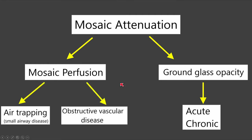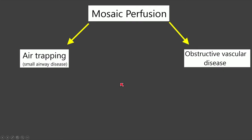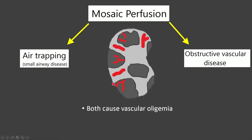Under mosaic perfusion there are two main categories: air trapping, also known as small airways disease, and obstructive vascular disease. Both air trapping and obstructive vascular disease result in a perfusional abnormality — specifically vascular oligemia — within the lung parenchyma, hence the name mosaic perfusion.